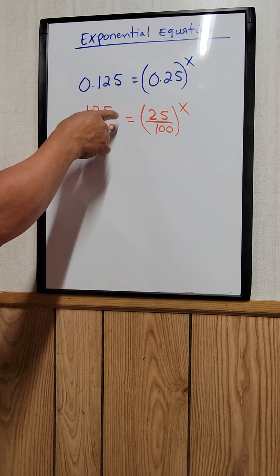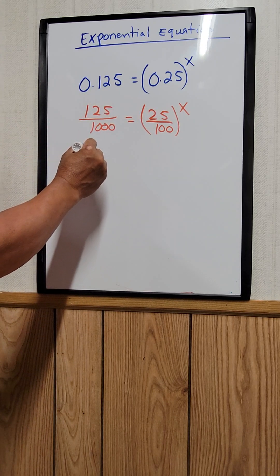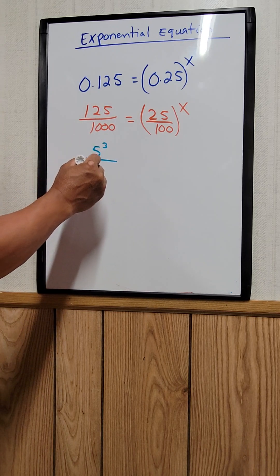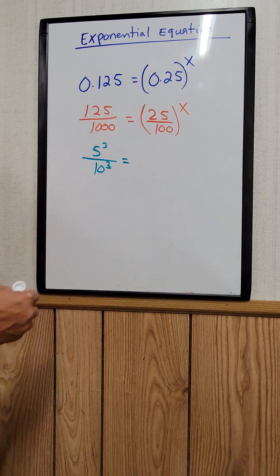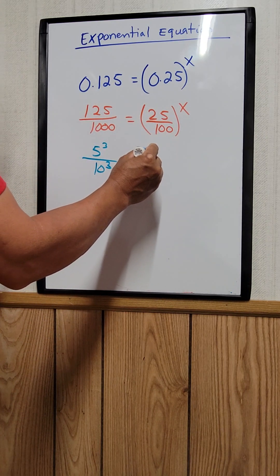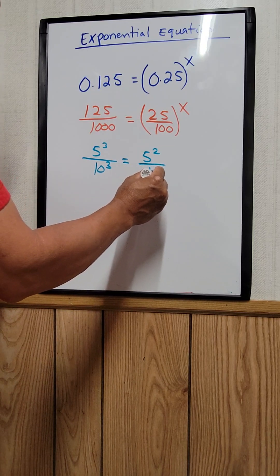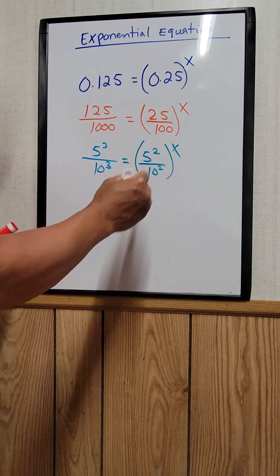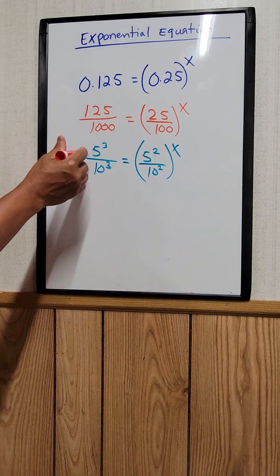125 can be written as 5 times 5 times 5, so five to the third power. And 1000 will be 10 to the third power. And 25 would be 5 to the second power, and 100 will be 10 to the second power, the whole thing to the x power.